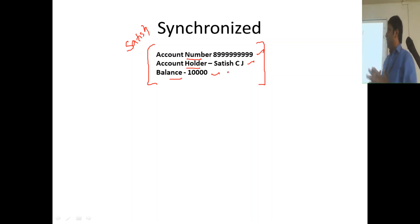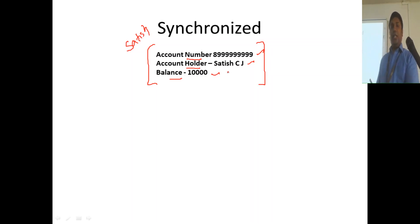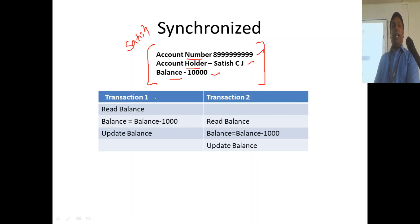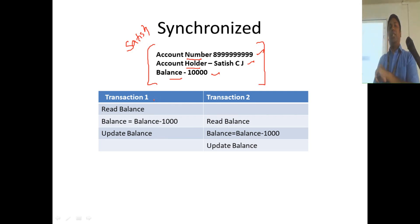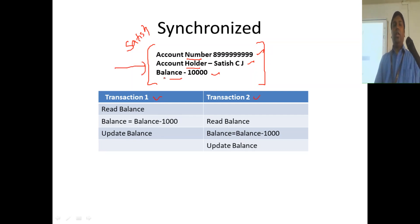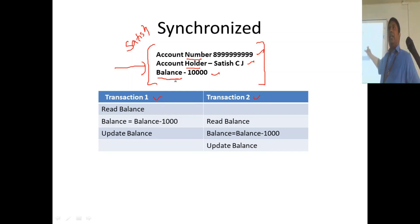Now when you have an object, multiple threads can refer to the same object. Say for instance I can have two transactions — each transaction can be considered as a thread. This is thread 1 and this is thread 2. What these threads are going to do is work on the same data item for the same object. So who is the object here? Satish. Two threads are going to work on the same object.